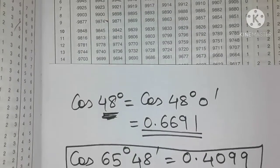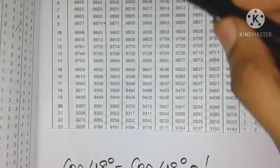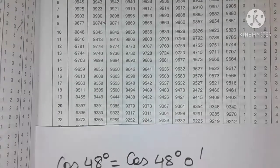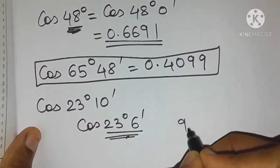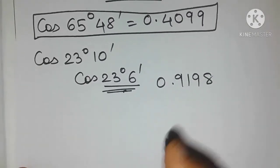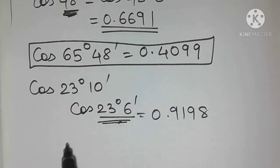So 23 degrees once again it's over here and 6 minutes. This is 6 minutes. It's 9198. So what is it? 9198 preceded with a decimal point. Now this is 23 degrees 6 minutes but we are interested in 23 degrees 10 minutes.